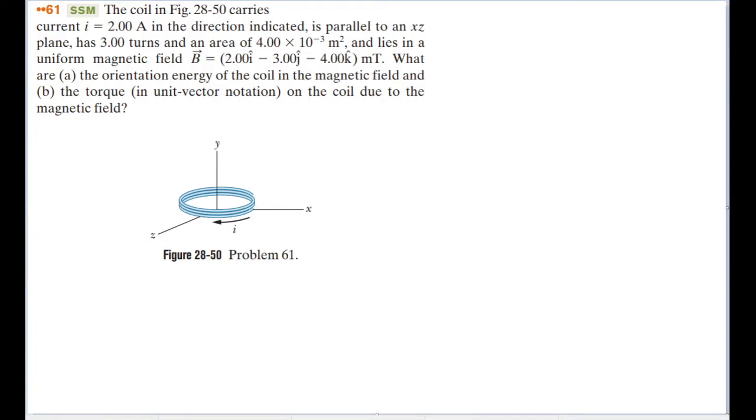The coil in the figure below carries a current of 2 amperes in the direction indicated. It is parallel to the XZ plane, has 3 turns, and an area of 4 times 10 to the negative 3rd meters squared, and lies in a uniform magnetic field of these values right here in milliteslas. What are the orientation energy of the coil in the magnetic field, and the torque in unit vector notation on the coil due to the magnetic field?